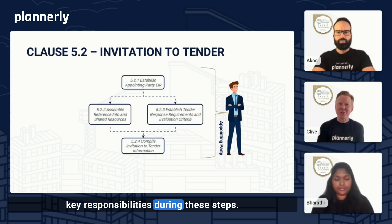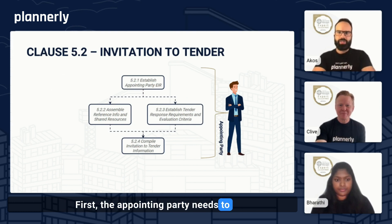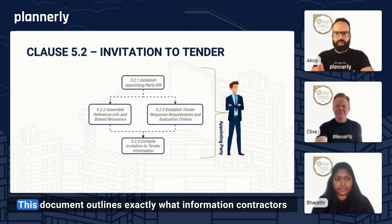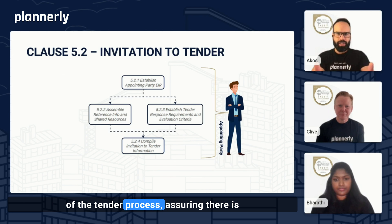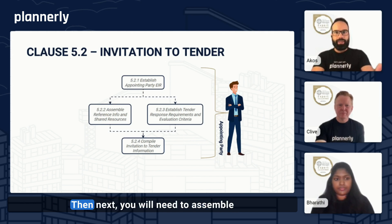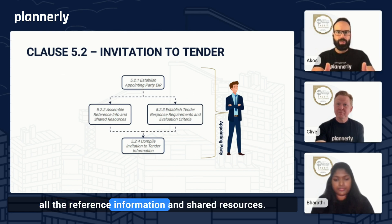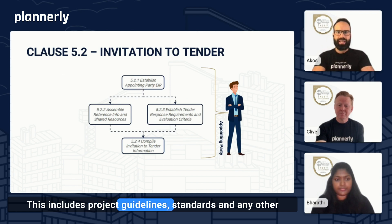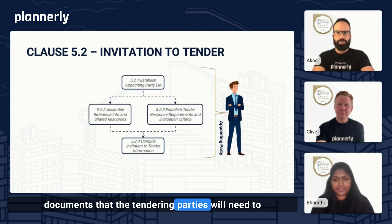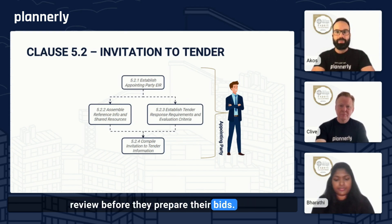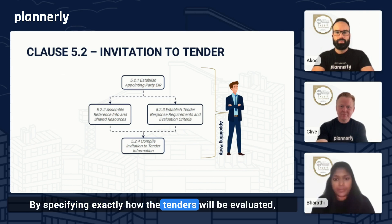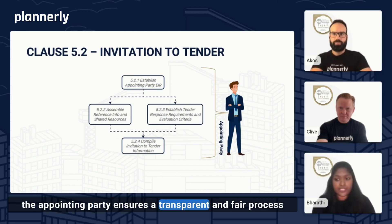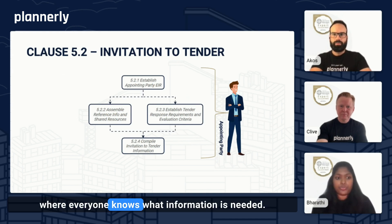Let's go through some of the key responsibilities during these steps. First, the appointing party needs to establish the exchange information requirements. This document outlines exactly what information contractors and consultants need to provide as part of the tender process, ensuring there is no confusion about what's required. Next, you'll need to assemble all the reference information and share the resources — project guidelines, standards, and any other documents that the tender parties will need to review before they prepare their bids. It's also crucial to establish clear tender response requirements and evaluation criteria, ensuring a transparent and fair process where everyone knows what information is needed.